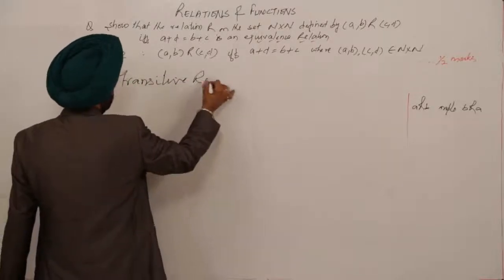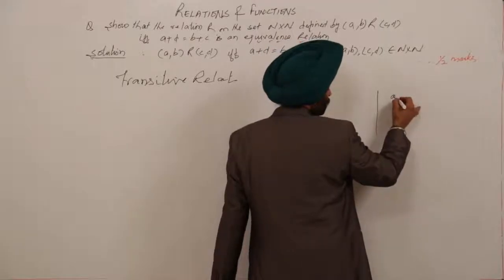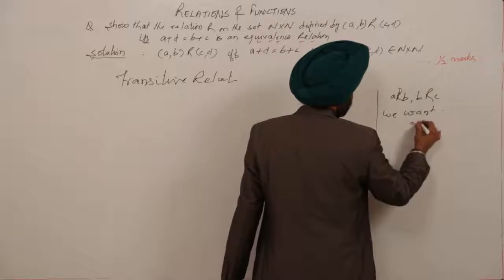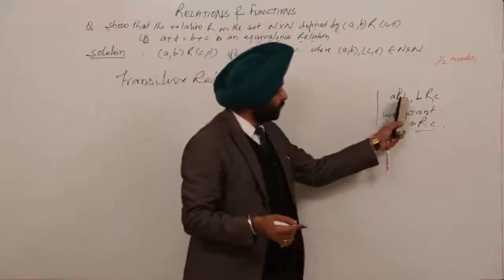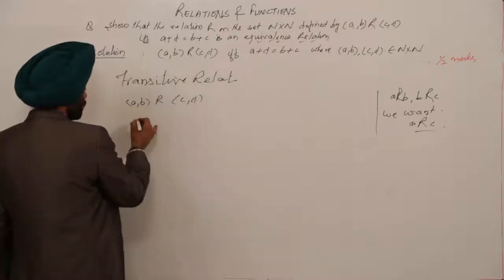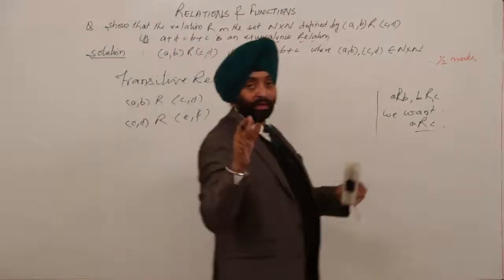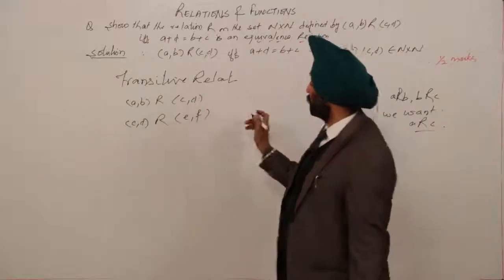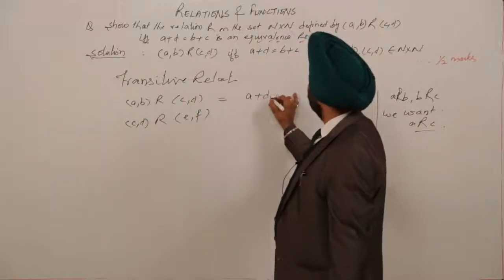For the transitive relation: if a R b and b R c, we want a R c. In our N×N setting, suppose (a,b) R (c,d) and (c,d) R (e,f). From the first: a+d = b+c. From the second: c+f = d+e.